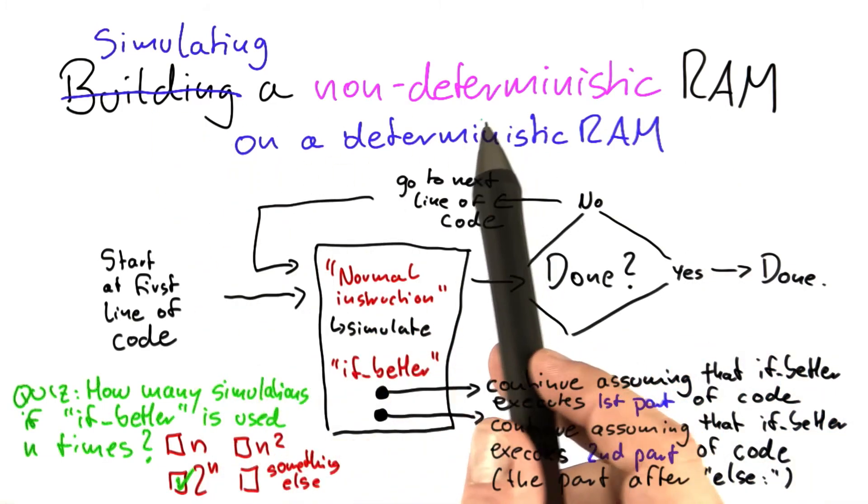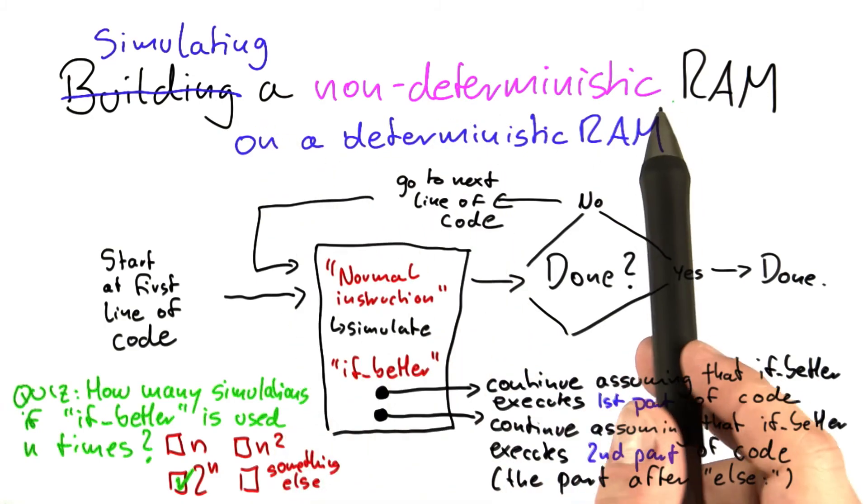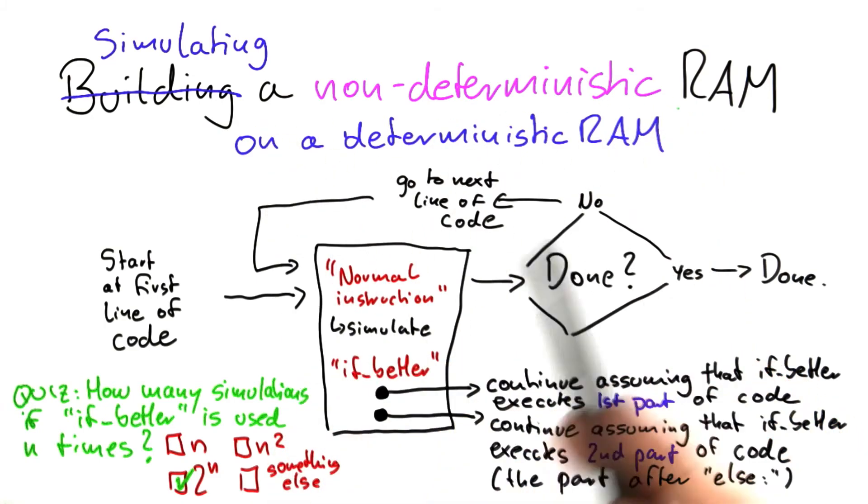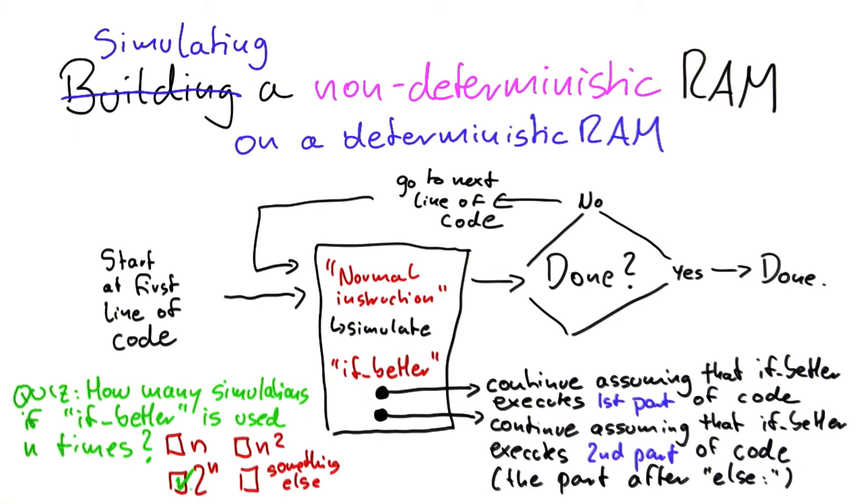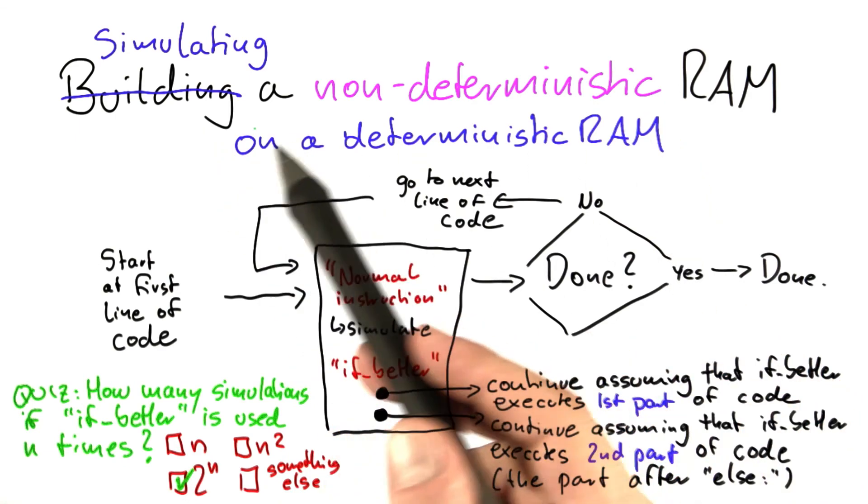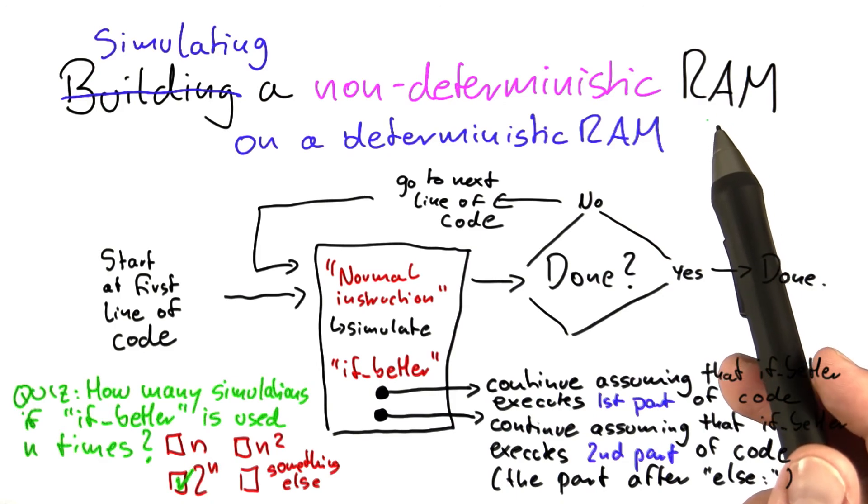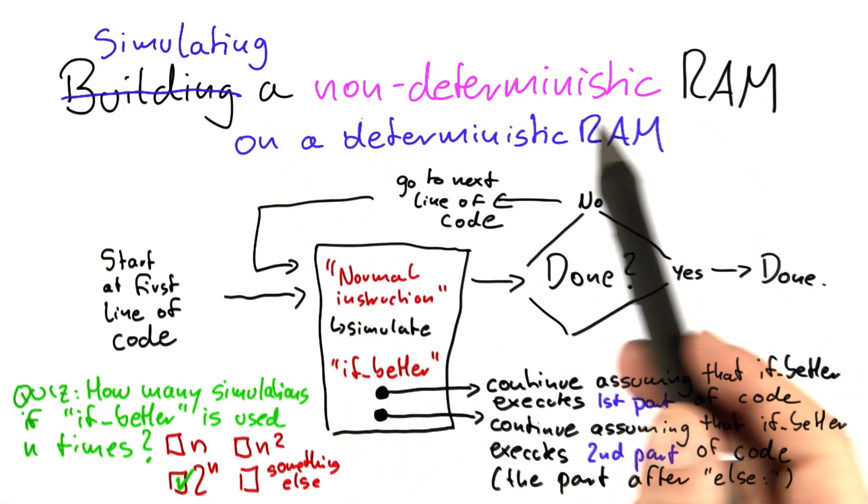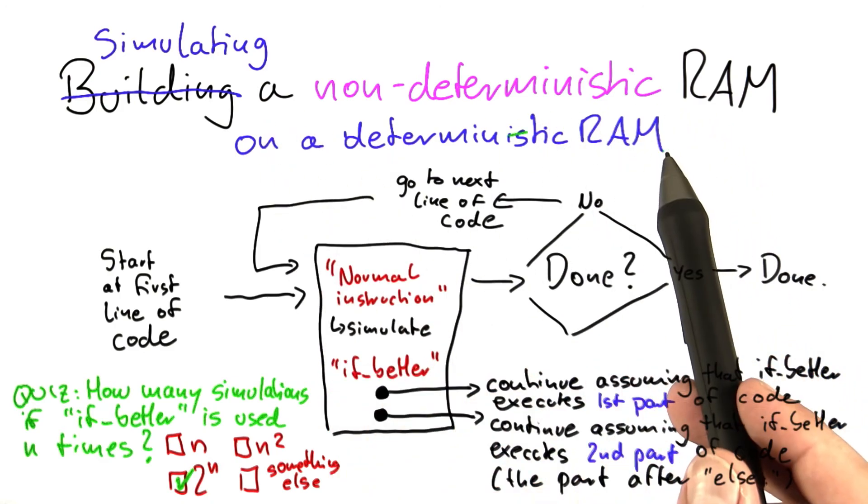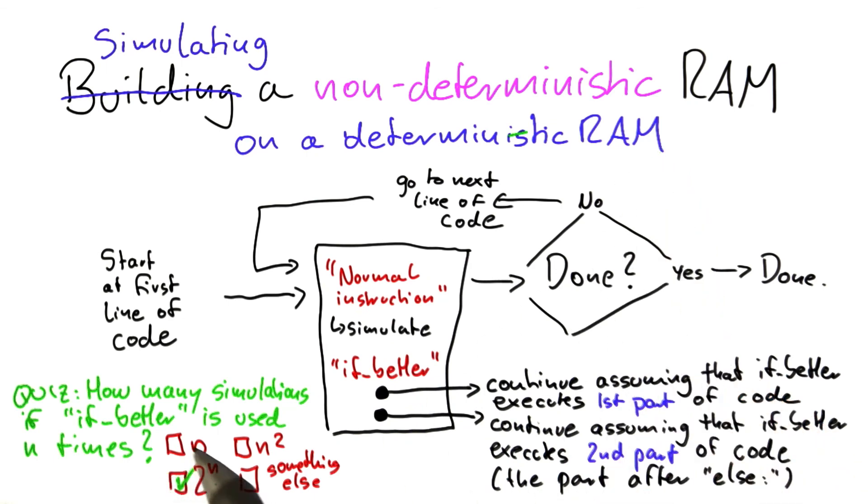So in a way, we're back where we started. We found out that we can simulate a non-deterministic RAM, but that's going to take us exponential time. So the question remains, is there a better way to simulate non-determinism, ideally with polynomial time, or does simulating non-determinism on a deterministic RAM always lead to exponential time?